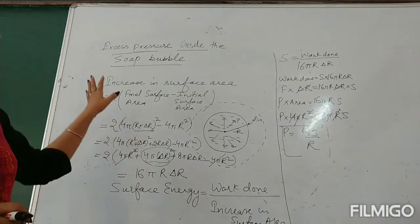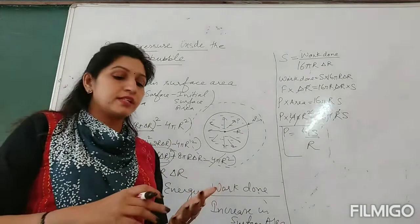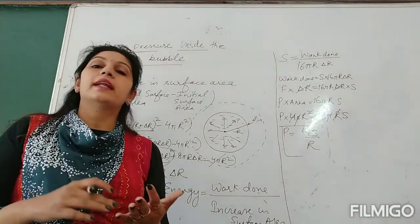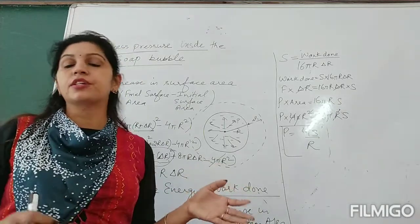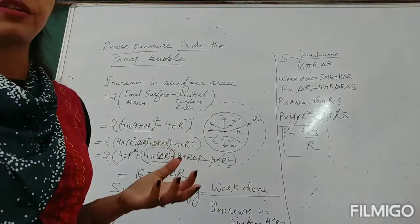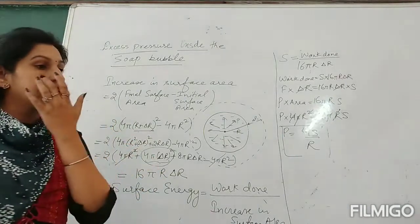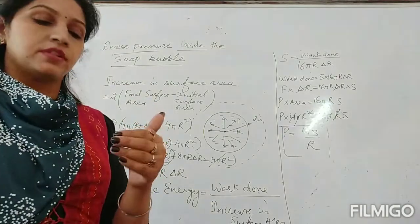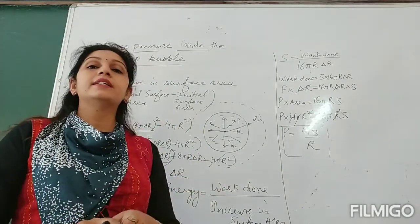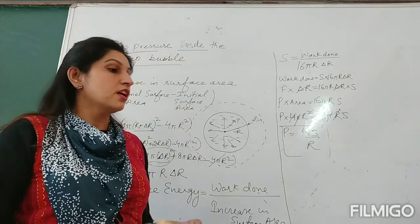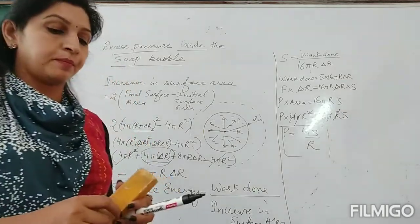This covers excess pressure inside the liquid drop, inside an air bubble, and inside the soap bubble. This excess pressure is because of their curvature. Now, we can have an idea about the meniscus from a quantity called angle of contact. So the next topic is angle of contact.